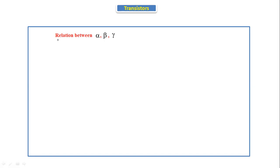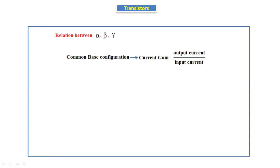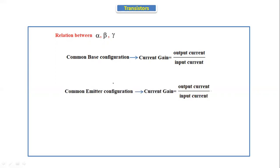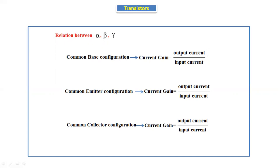Hello everyone. Today's topic is the relation between alpha, beta, and gamma. In the previous class we discussed the comparison between CB, CE, and CC configurations. Today we will relate alpha, beta, and gamma. First, we will see the definitions of current gain. In the common base configuration, the current gain is indicated by the output current divided by input current.